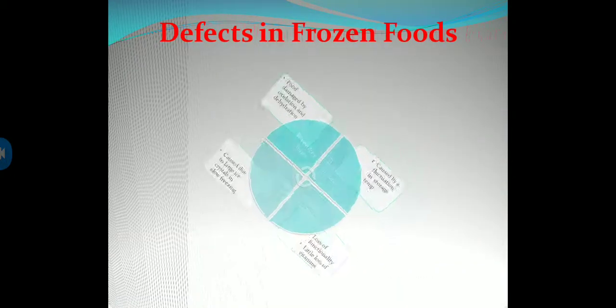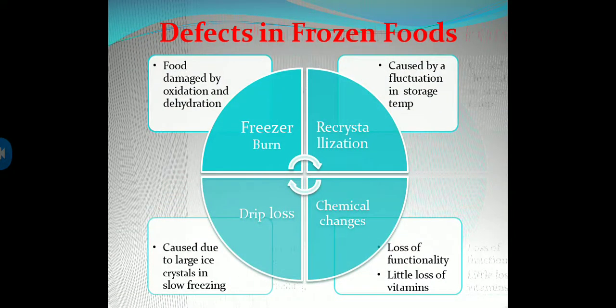Defects in frozen foods are caused by fluctuation in storage temperature, food damaged by oxidation and dehydration — that is freeze burn — and recrystallization. Other defects caused by ice crystals in slow freezing include drip loss, chemical changes, loss of functionality, and slight loss of vitamins.